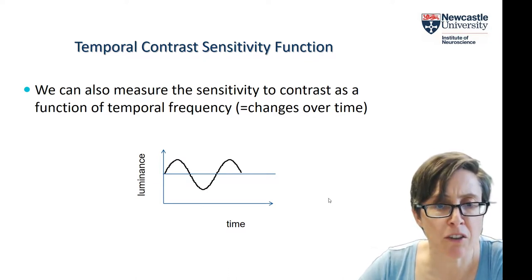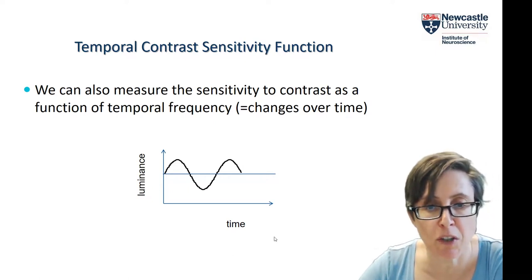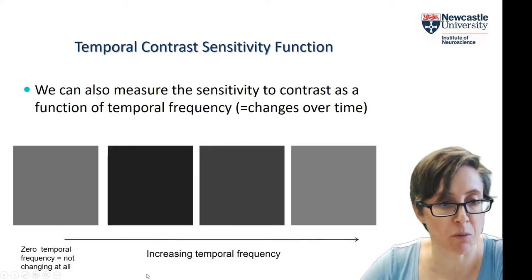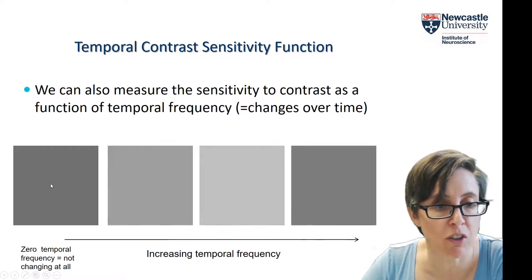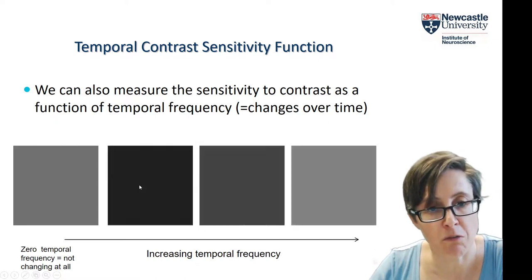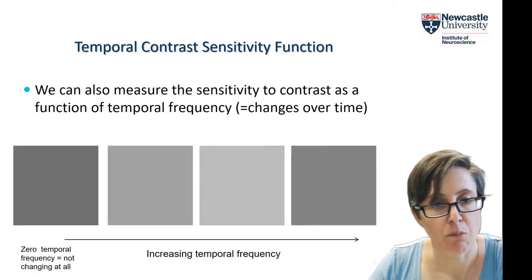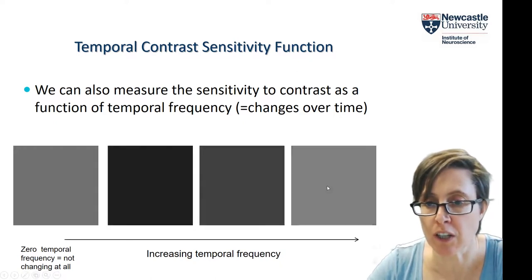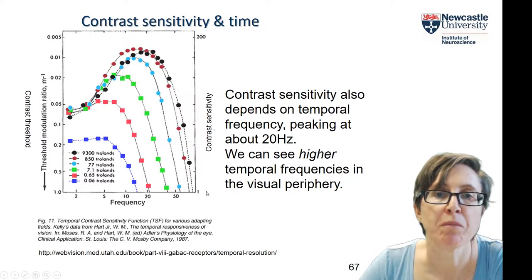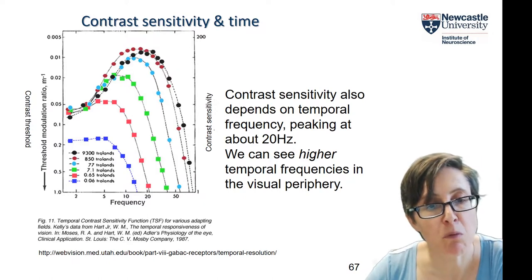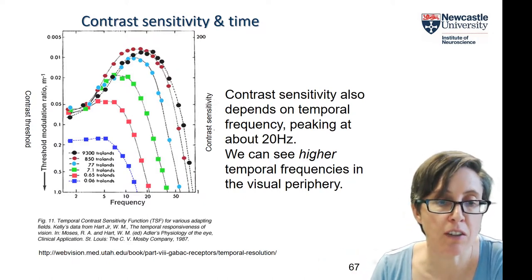Remember the slide earlier showing spatial frequency luminance gratings increasing left to right in spatial frequency? Here is the same thing increasing left to right in temporal frequency. On the left we have something that's not changing at all — that's zero temporal frequency. Then we have something changing from dark to light and back quite slowly, and over here something going rapidly from dark to light and back quite fast. In exactly the same way, you can ask people to discriminate when they can see the flicker versus the steady illumination.